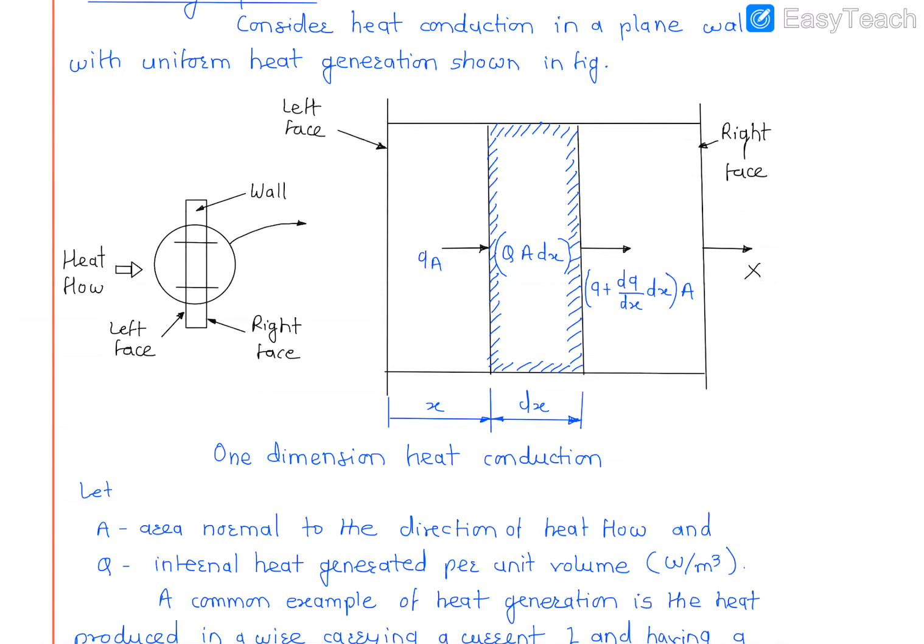QA is the heat flux entering the wall, Q is the internal heat generated per unit volume, and Q + (∂Q/∂x)dx is the heat flux leaving the wall. So heat flux entering the wall, heat flux leaving the wall, and internal heat generated - these three parameters are there.